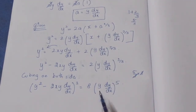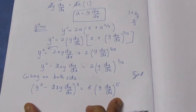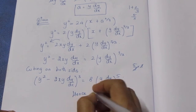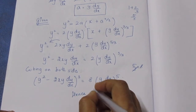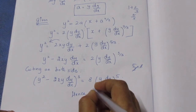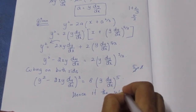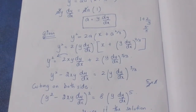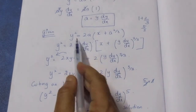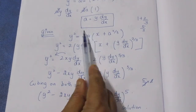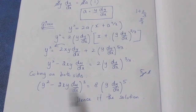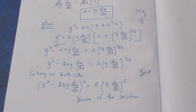This is what we have to prove. We can do it directly or via LHS equals RHS. Substituting a = y·dy/dx and cubing, we arrive at the solution. LHS equals RHS — this is the solution. That is the sum. Thank you.